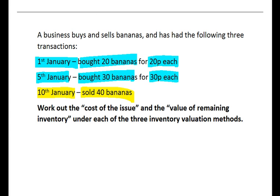Well we're after the same two key pieces of information as you'd normally be asked for here. We're looking for the cost of the issue, so what's the cost of the 40 bananas that they're selling, and then what's the value of the remaining inventory. Well if they had a total of 50 bananas all jumbled up in a pile and they've sold 40 of them, they're going to have 10 bananas left. So what's the value of those remaining bananas? That's essentially their closing inventory at the end of the month.